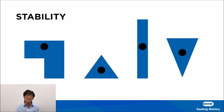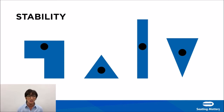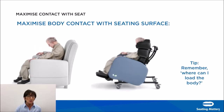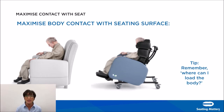Stability is when we have a wide base of support and a low center of gravity. Looking at these four diagrams, the second demonstrates a stable base of support and a low center of gravity. We've designed our chairs around this principle. If someone is sliding and you're having a problem with forces or slipping, you need to consider lowering the center of gravity and increasing the base of support. Overall, we want to maximize body contact with the seating surface - get as much of the body in contact with the chair as possible. This stabilizes the body and spreads the weight over a large surface area, reducing interface pressure and therefore reducing damage to skin.